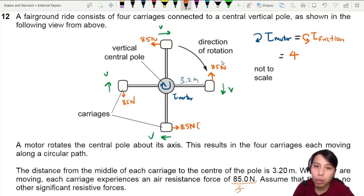Then we think, okay, each force contributes force times distance because, a reminder, torque or moment equals the perpendicular force times distance. Which is just nice. Everything's perpendicular. So four times, four carriages, 85 newtons times 3.2.